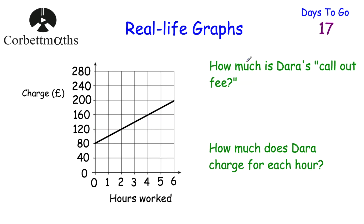The next question says: how much is Dara's call-out fee? In certain situations there's a set fee - perhaps like a taxi where the meter starts at a particular price before the journey begins. When you call a plumber, there might be a call-out fee to visit the house, and then an hourly rate. To find the call-out fee, we go to zero hours, go up, and we can see that's £80. That's the y-intercept. So that set charge is £80 - that's Dara's call-out fee.